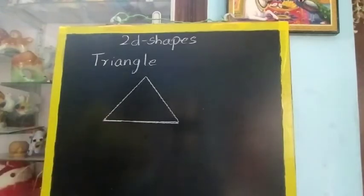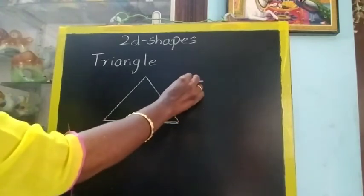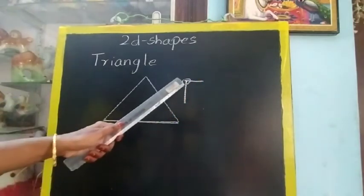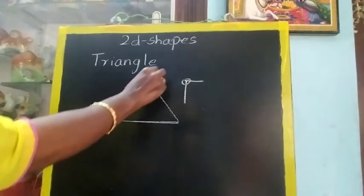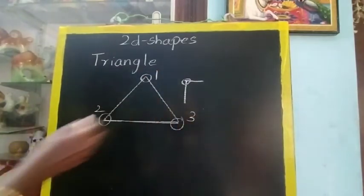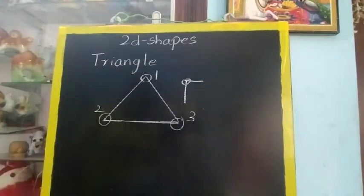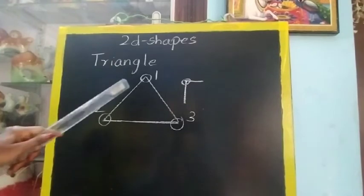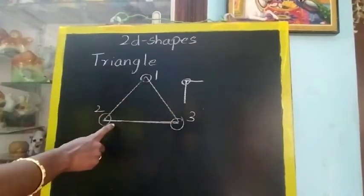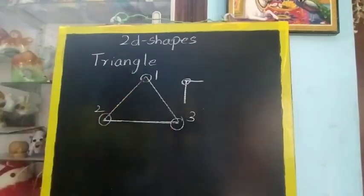How many corners are there in this triangle? What is meant by a corner? If 2 straight lines meet — see, this is a straight line and this is a straight line, here they are meeting — this is called a corner. So this triangle has 1, 2, 3 corners. A triangle has 3 sides: side 1, side 2, side 3 — and 3 corners.